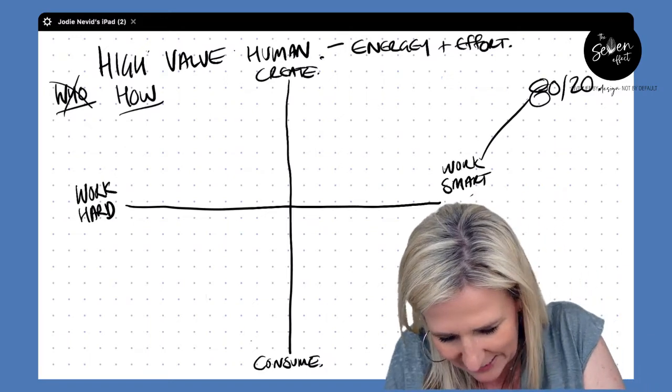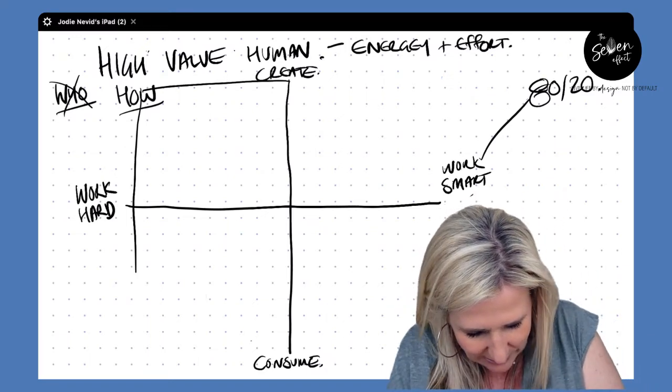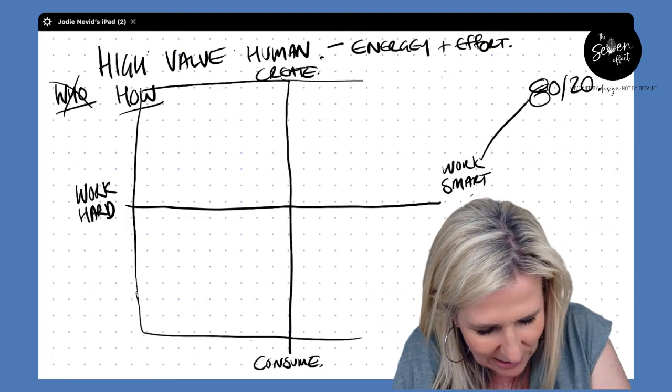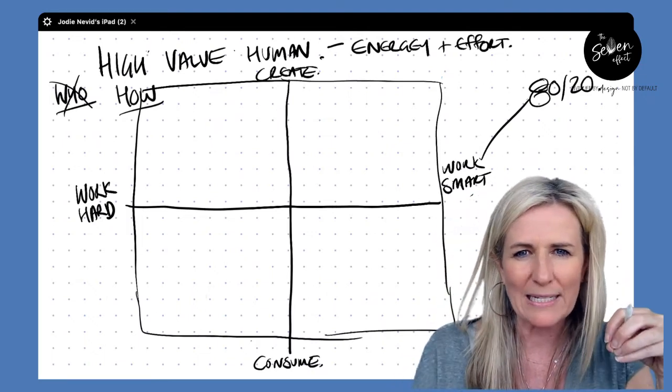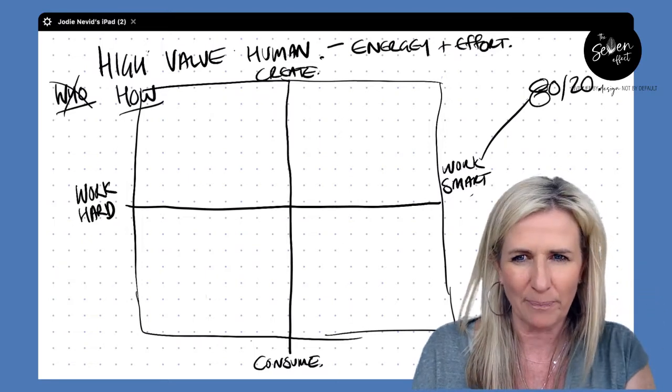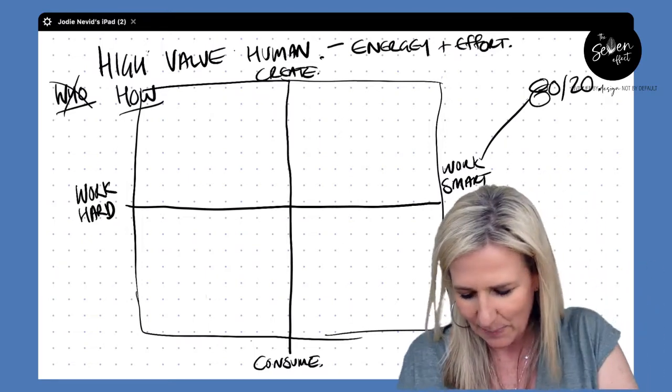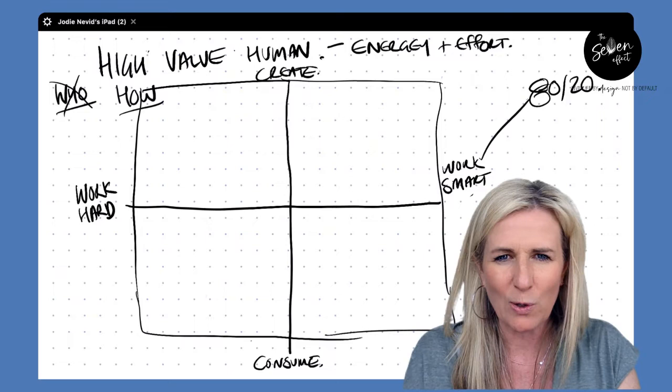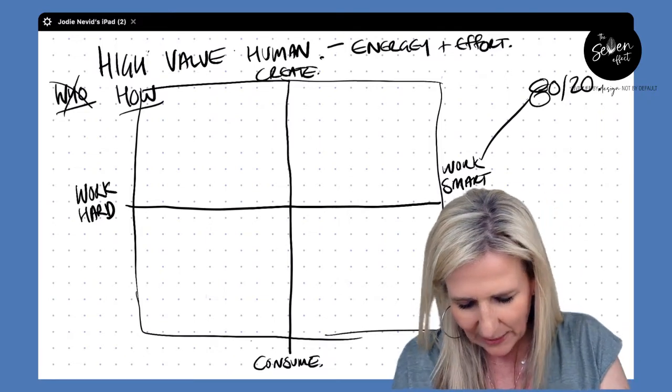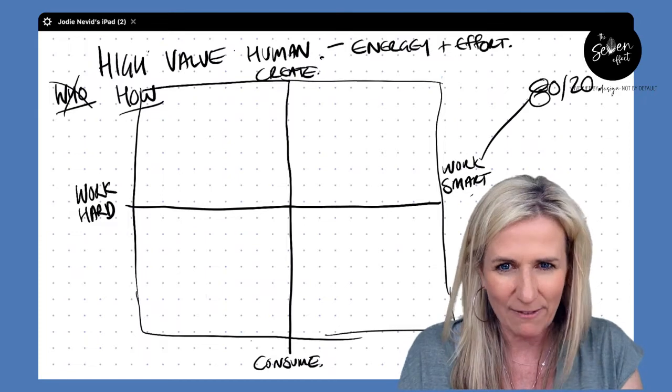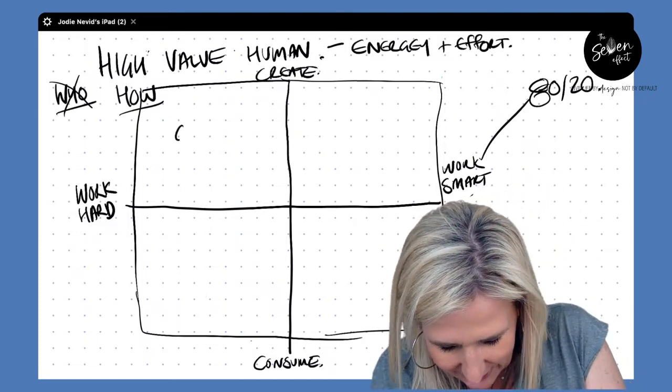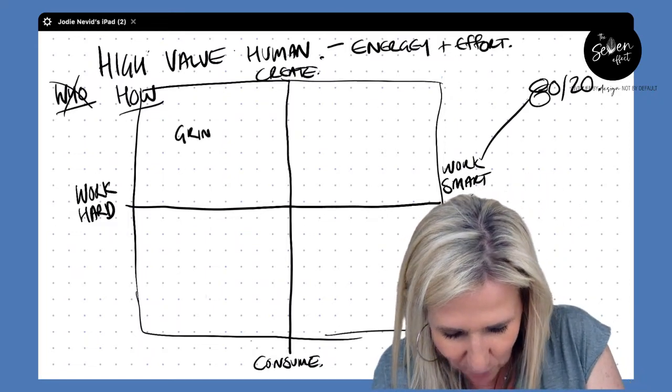And so when we understand the quadrants around energy and effort, we end up with these four different places that we can all operate from. And again, as I said, this isn't about who you are, but how you are being. So up here, when we're working hard and we're creating energy, we're adding value. It's the space that I call the grinder.